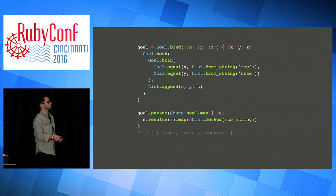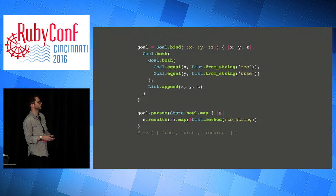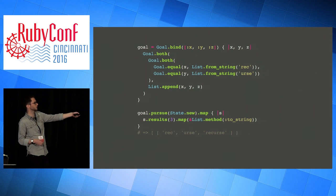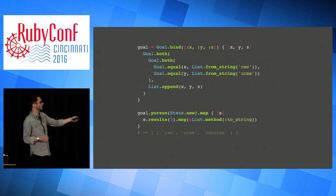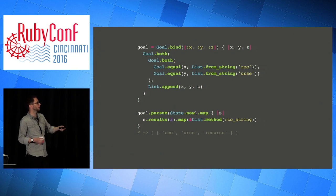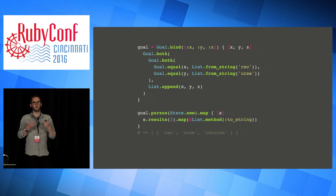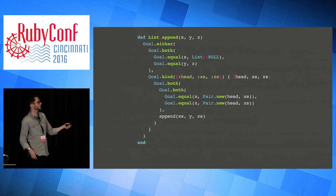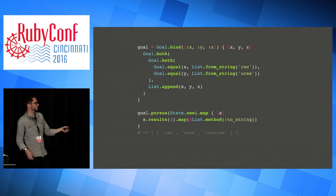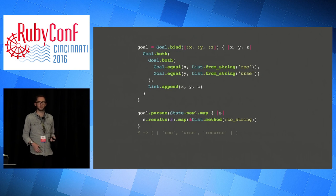This describes all the things that have to be true for an append function to work. You've described what appending means - not just how to do it, but what it means for an append function to do its job. So for example, if I make variables X, Y, and Z and say X is the string 'REC' and Y is the string 'URSE', and I want X and Y appended to give Z, then when I pursue that state, what I get is: it tells me X is 'REC' like I said, Y is that, and Z is 'RECURSE'. It concatenated X and Y together for me. I didn't write any code to tell it to do that - it just figured out that Z must be that for this to be true.